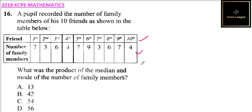What was the product of the median and mode of the family? So what you do is you can arrange this data in ascending order, that is in an increasing order.